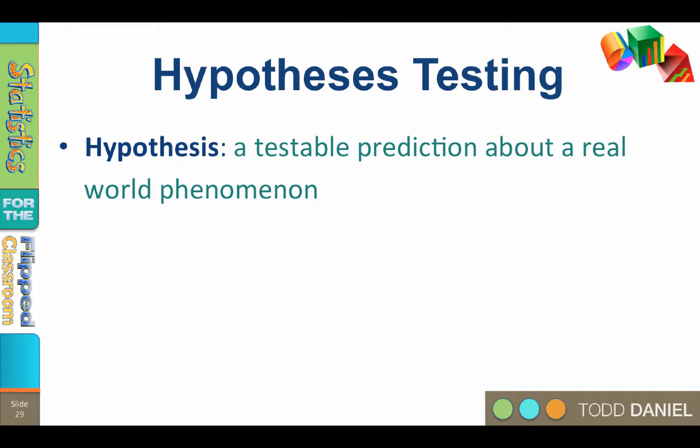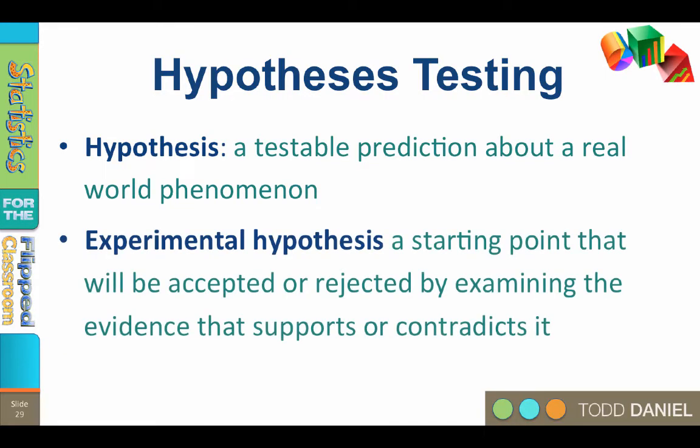A hypothesis is a testable prediction about a real-world phenomenon. For example, 'I think this drug will lower blood pressure' is a testable hypothesis. Experimental hypotheses propose a starting point that will then be accepted or rejected by examining the evidence that supports or contradicts it. If the evidence supports the hypothesis, we accept it as a good explanation. If the evidence refutes the hypothesis, we reject it as a poor explanation.